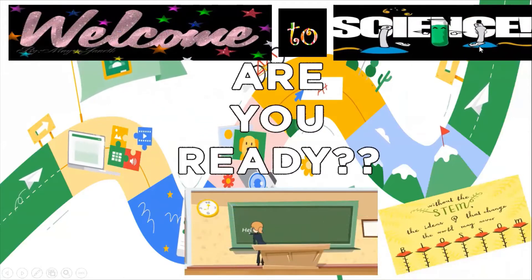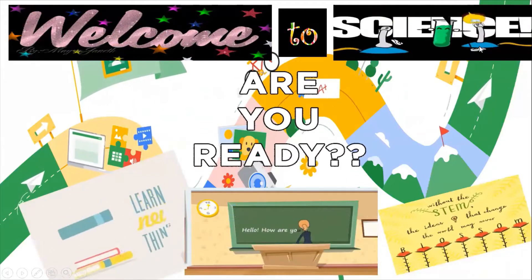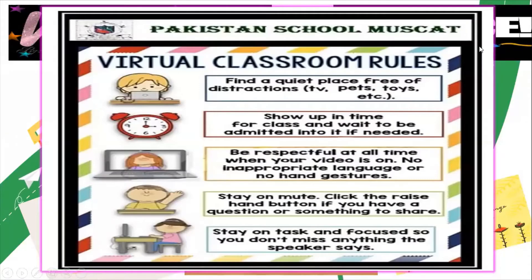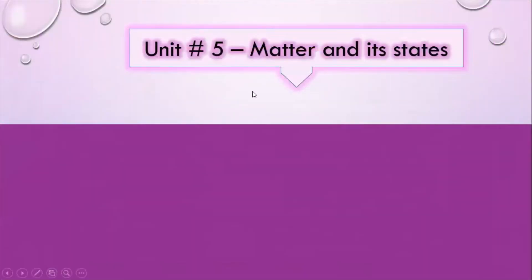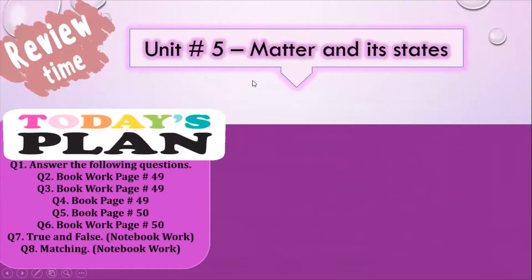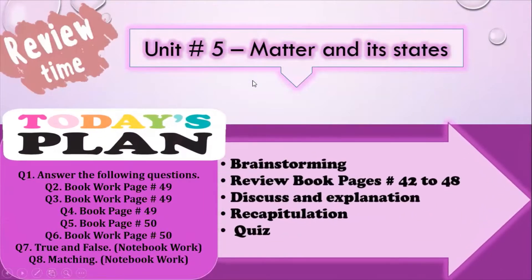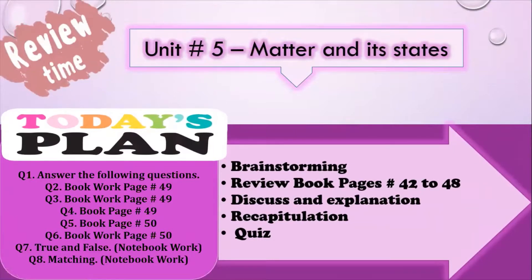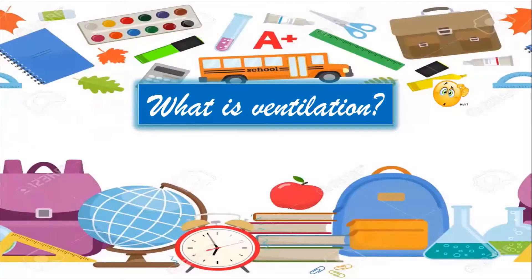Are you ready to review unit number five? Don't forget the rules, it will help you to focus on what we are learning. Unit number five, matter and its states. This plan will review some important parts of the lesson from book pages number 42 to 48. We'll discuss and explain some important parts, after that recap and then quiz. So let's get started students.